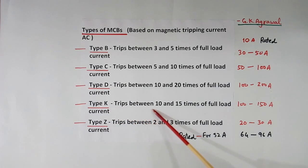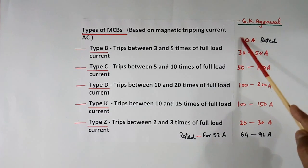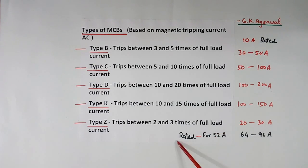Type K trips between 10 and 15 times. 10 times means 100 of this, 15 times means 150 A of this. So 100 to 150 A. Similarly type Z will trip between 2 and 3 times. 2 times of this means 20 A, 3 times means 30 A. So type Z will trip in the 20 to 30 A range, provided rating is 10 A. For 32 A rated current, 2 times will be 64 A and 3 times will be 96 A. So type Z, 32 A MCB will trip in range of 64 to 96 A. That is what I just showed.